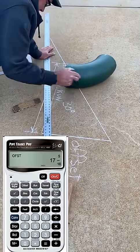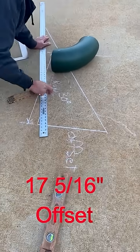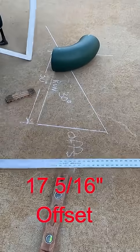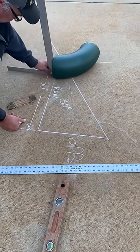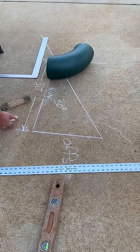So I drew a line up 17 and 5 sixteenths. I'm going to put my 90 in that 90 degree corner, take my square, make sure that the fitting is plumb.